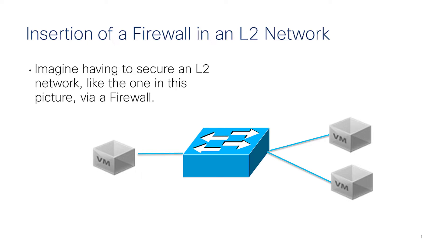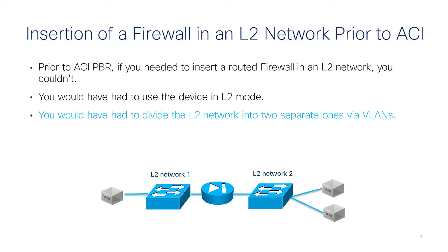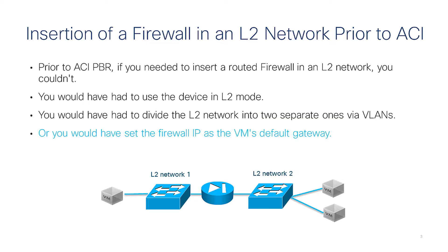If you needed to insert a firewall in an existing Layer 2 network prior to using ACI with PBR, either you would create two separate Layer 2 networks and put the firewall in Layer 2 mode between them, or you would configure the firewall in Routed Mode and then point the default gateway of the virtual machines to the firewall.